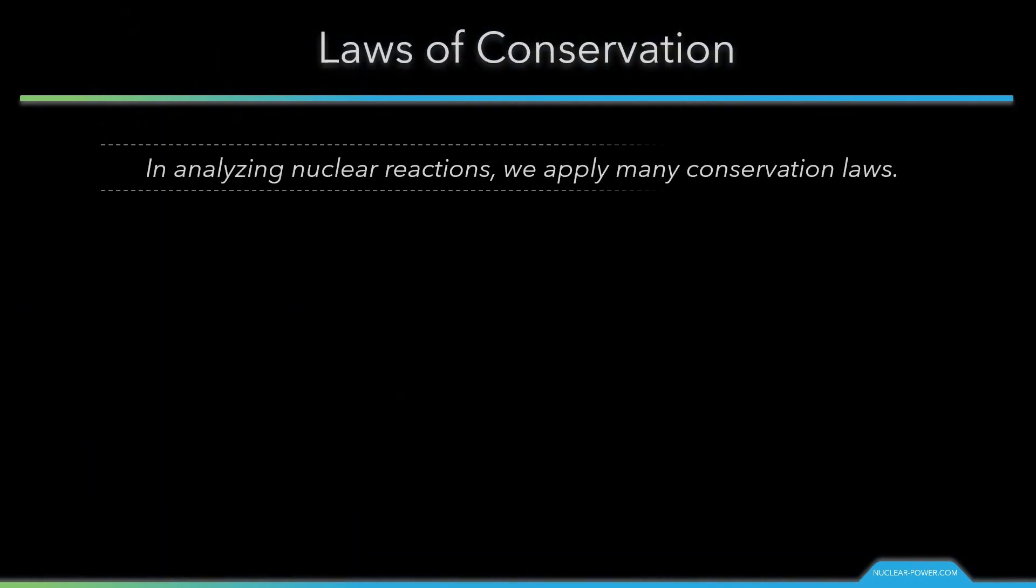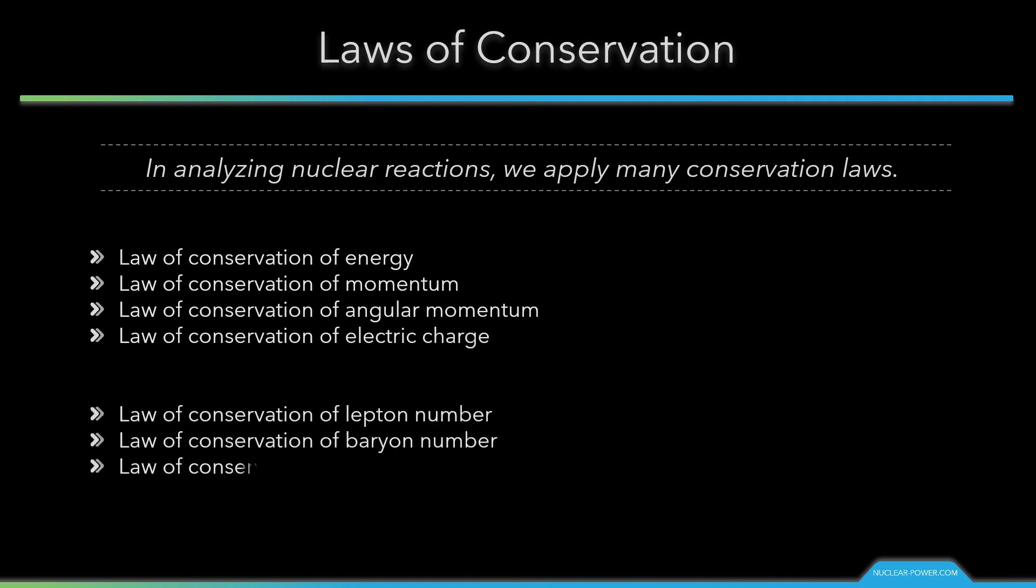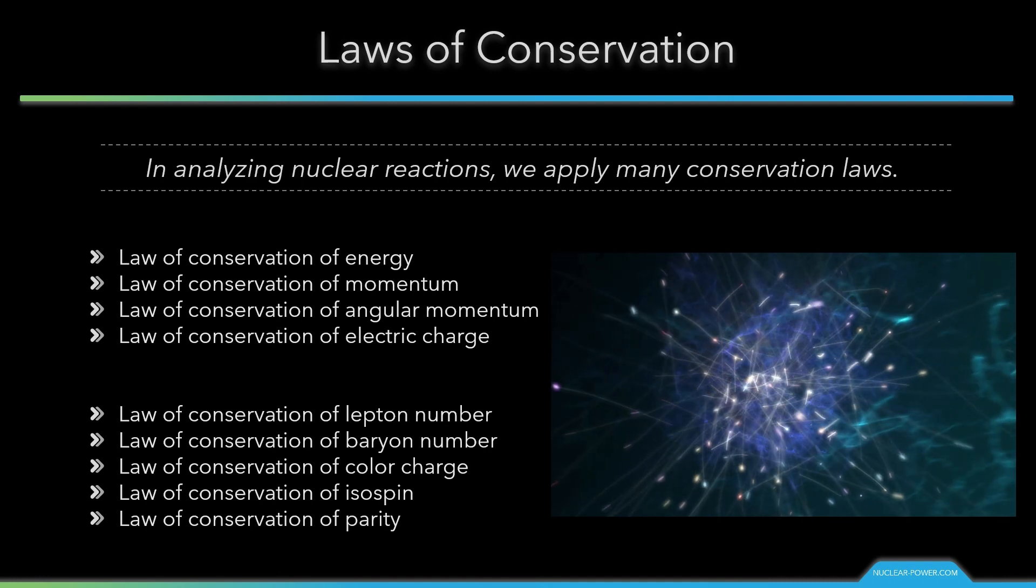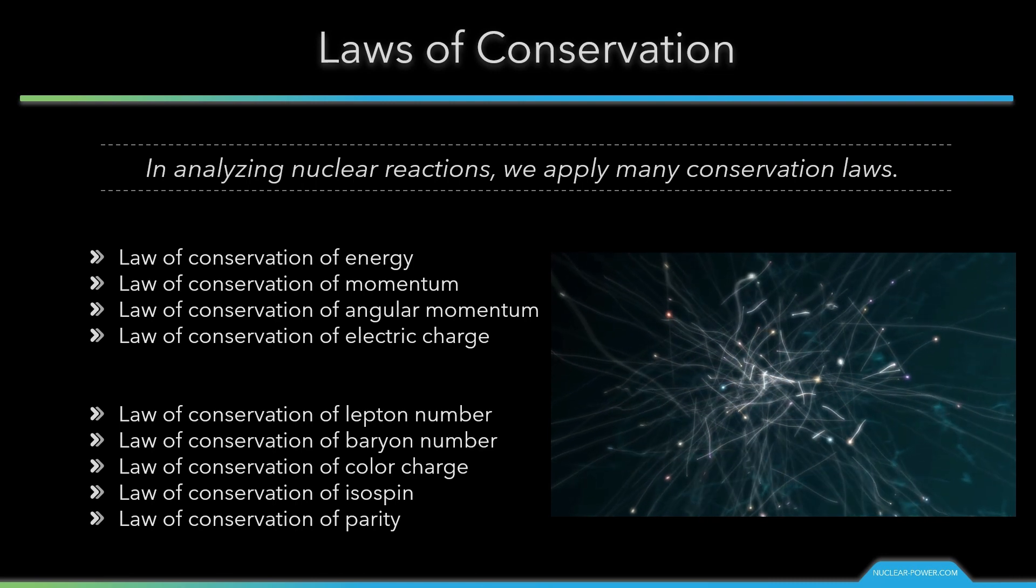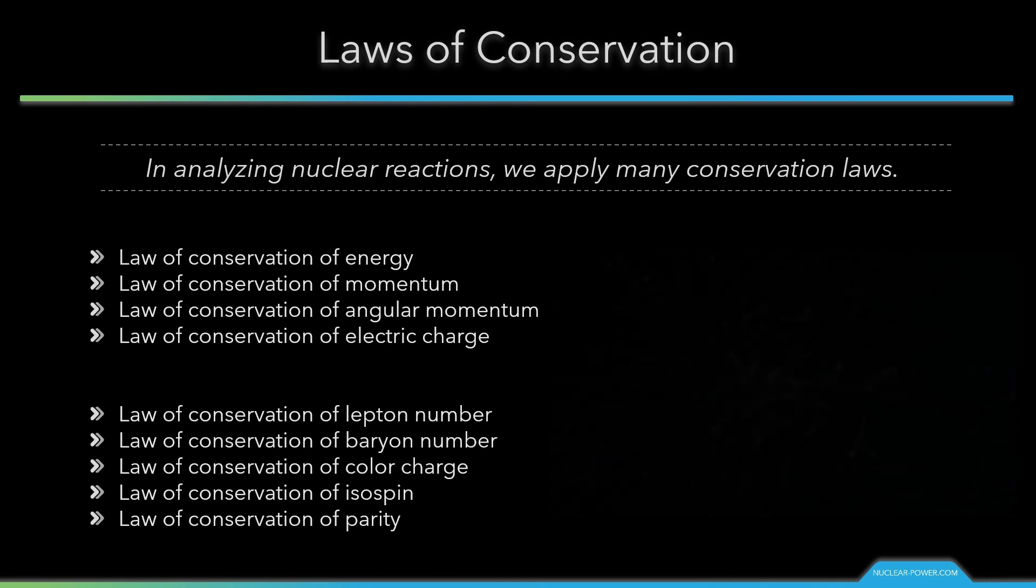In analyzing nuclear reactions, we apply many conservation laws. Nuclear reactions are subject to classical conservation laws for electric charge, momentum, angular momentum, and energy. Other conservation laws not anticipated by classical physics are the conservation of the lepton number and the baryon number. Conservation of isospin and parity are also not anticipated by classical physics. These laws are discussed in more detail on our website.